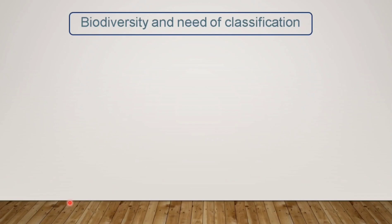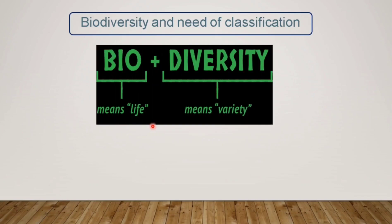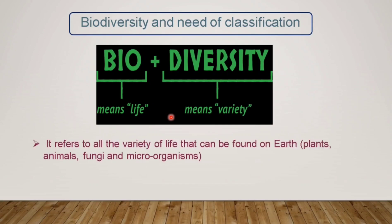Let us move towards biodiversity and need of classification. Bio means life and diversity means variety. From this picture, we can see that where there is a variety of life forms, that is called biodiversity. It refers to all the variety of life that can be found on Earth, like plants, animals, fungi, and other microorganisms — found on land as well as in water.